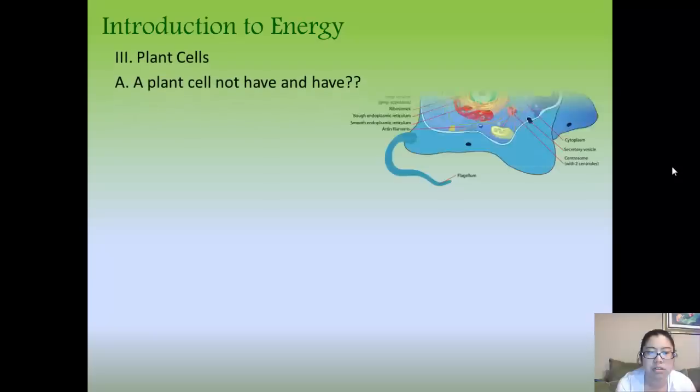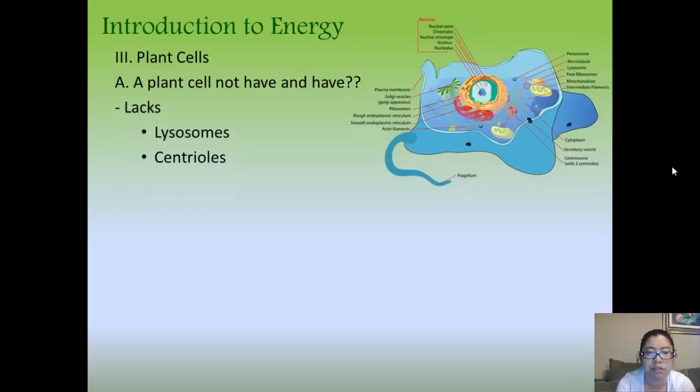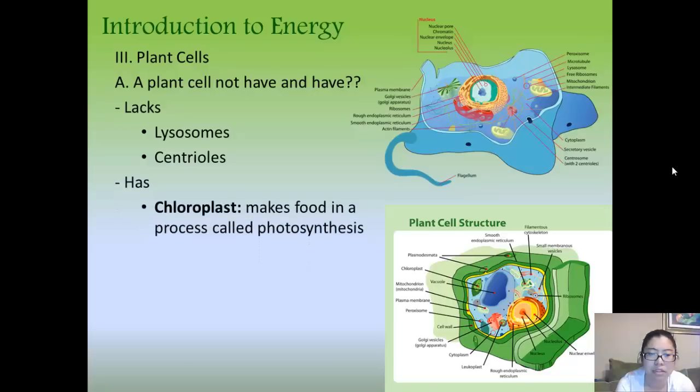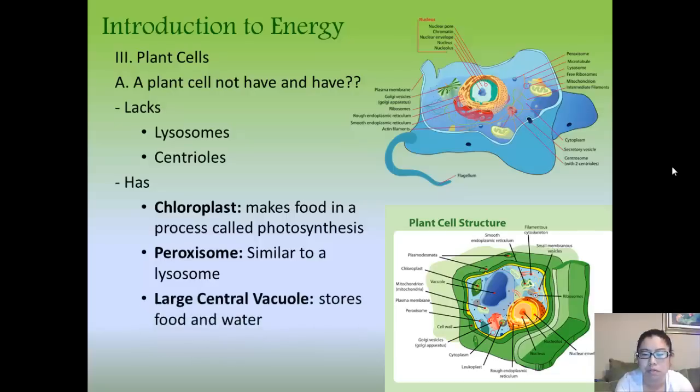As a quick review, a plant cell lacks lysosomes and centrioles. It also has chloroplast, which makes food in a process called photosynthesis, which we will talk about later on. Peroxisomes are very similar to lysosomes; they digest unwanted or mutated components of a cell.